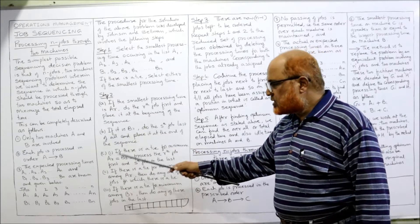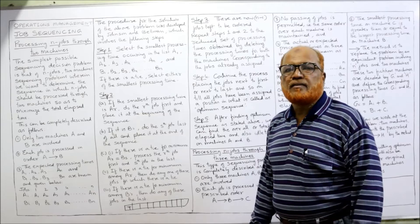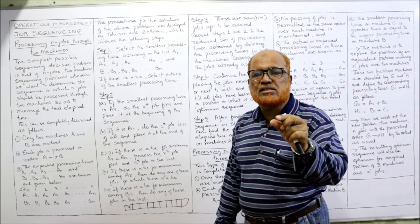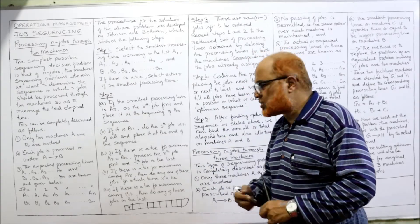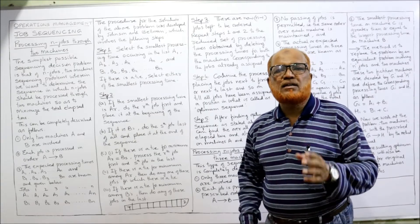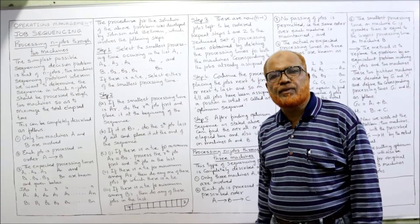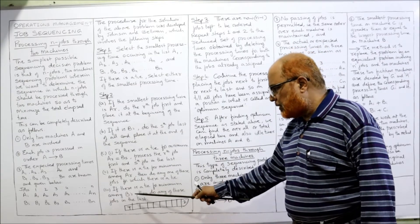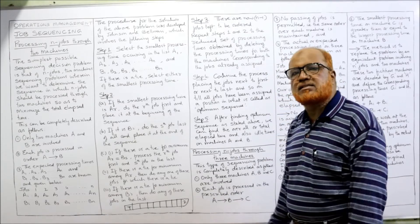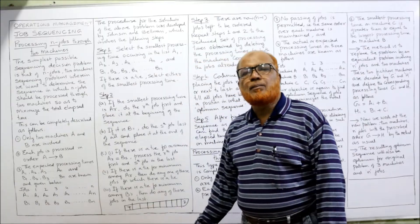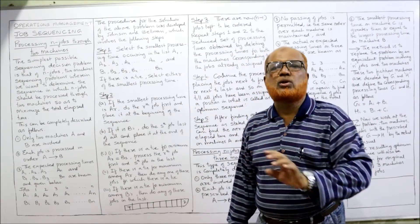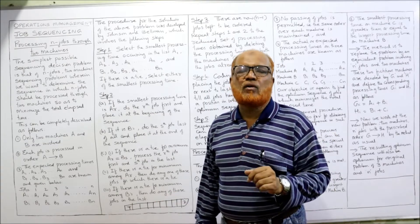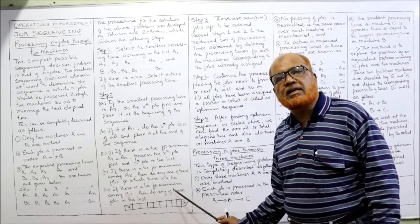If the smallest time is on machine B, find which job it belongs to and place that job in the last cell — the right-hand side. To summarize: if the smallest time is on machine A, assign it on the left side; if it is on machine B, assign it on the right side. If there is a tie on machine B — say job 2 and job 9 both have 10 hours — place either of those jobs on the right side.